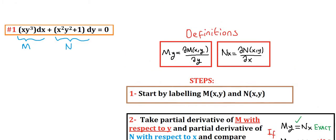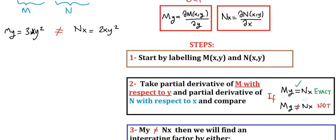Now we take the partial derivative of M with respect to y and the partial derivative of N with respect to x, so we can compare them and determine whether the equation is exact or not. So M_y will be 3xy², where x is the constant and y is the variable we are differentiating. And N_x — we differentiate with respect to x — so 2xy² is obtained, and the derivative of 1 is 0 because it is a constant. Now we can see that M_y is not equal to N_x, so at step 2 we can tell that it is not exact.